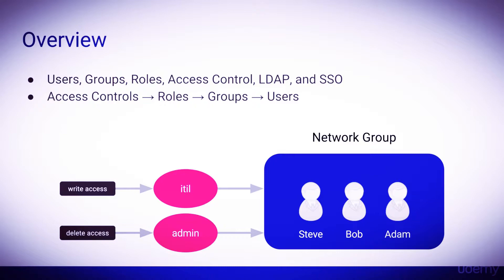Because the access controls are assigned to roles, and roles are assigned to groups, if a new user is added to the network group, they will automatically inherit the roles and access controls that belong to that group. To quickly summarize: access controls are assigned to roles, roles are assigned to groups, and groups contain one or more users. It's important to note that roles may be assigned directly to users; however, it's best practice to create groups and assign users to a group which contains the roles.